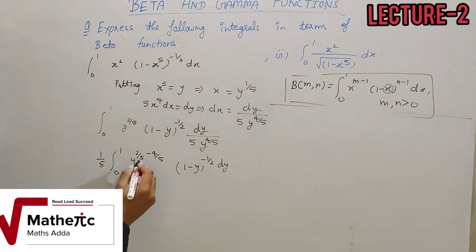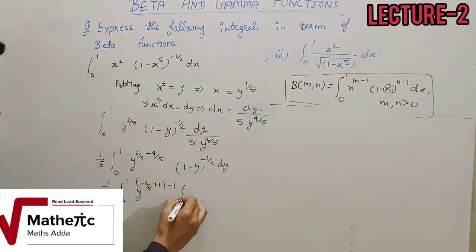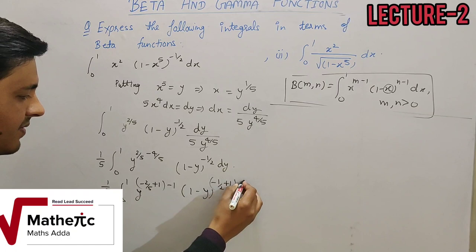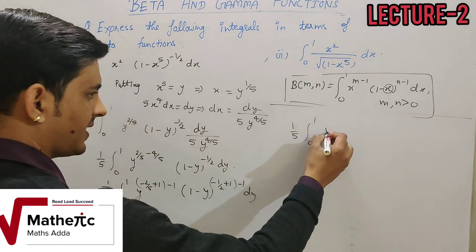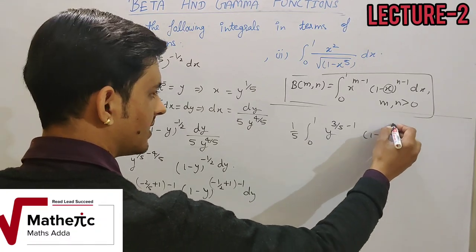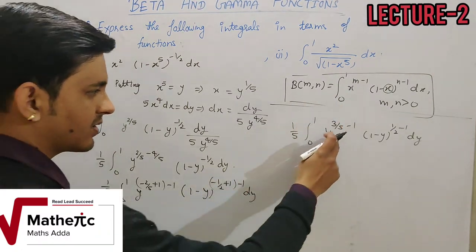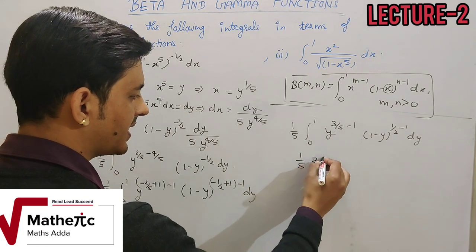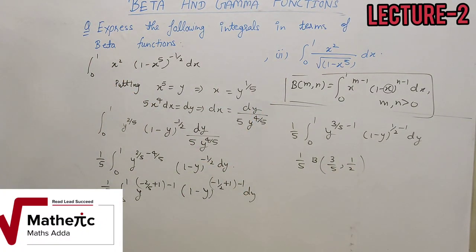As explained in the first numerical, we add 1 and subtract 1 to bring in the minus-1 term. So the integral becomes (1/5) · ∫₀¹ y^(3/5 - 1) · (1-y)^(1/2 - 1) dy. Both terms are positive, satisfying the beta function conditions. Therefore this integral equals (1/5) · beta(3/5, 1/2).